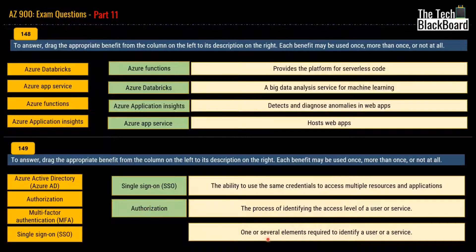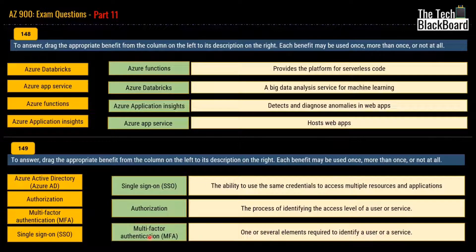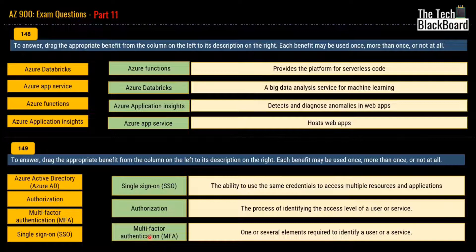The third definition — one or several elements required to identify a user or service — is multi-factor authentication. Multi-factor authentication is something most people already use. For example, when logging into your bank account, the first level is your user ID and password, and then the bank sends a text message or code to your mobile number, or you use an app like Google Authenticator or Microsoft Authenticator. You are authenticating on multiple levels — that's the crux of multi-factor authentication, enforcing the user to use more than one level of authentication to validate their identity.